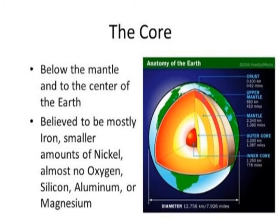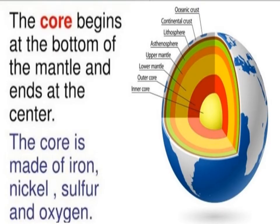The core is mostly made up of iron and smaller amounts of nickel, with almost no oxygen, silicon, aluminum, or magnesium. The core begins at the bottom of the mantle and ends at the center of the Earth. As shown in this diagram, there is both an outer core and an inner core.